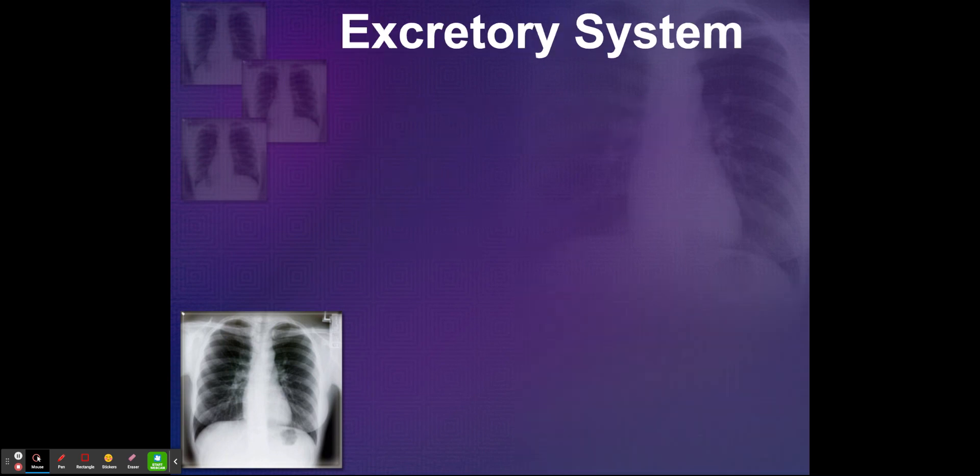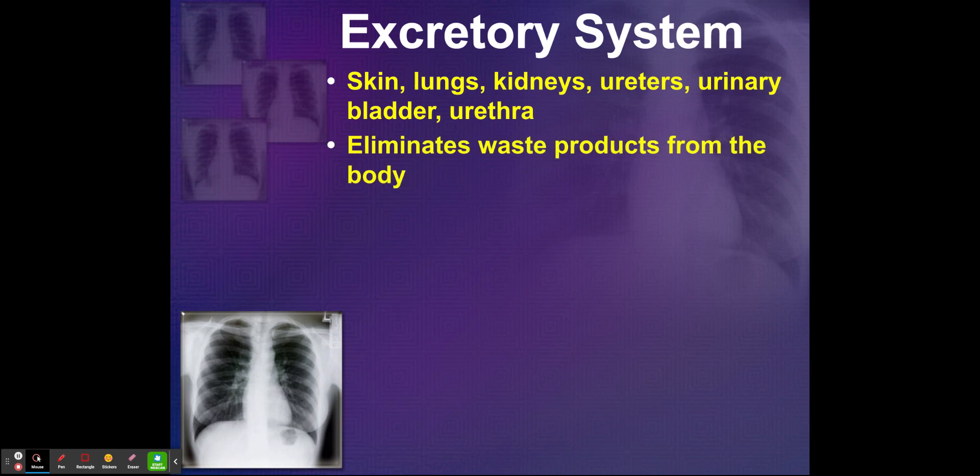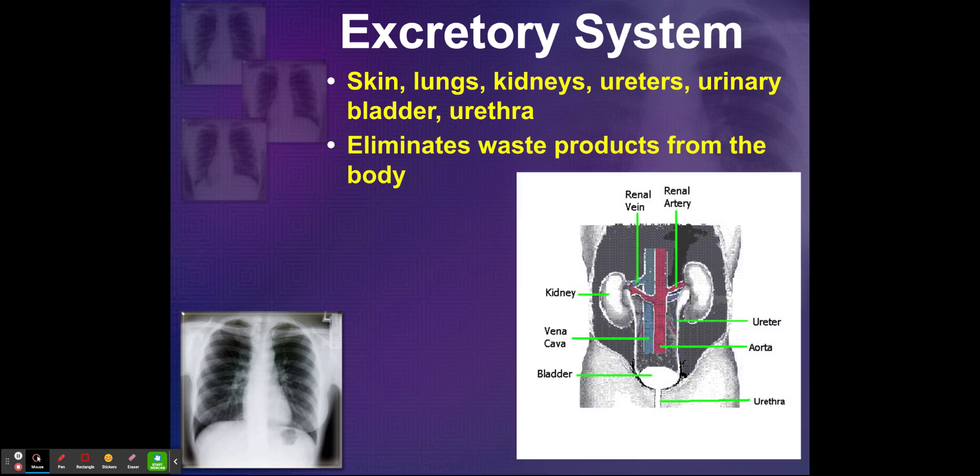We have your excretory system, which includes your skin, lungs, kidneys, ureters, urinary bladder, and urethra. It eliminates waste products from the body.